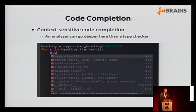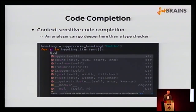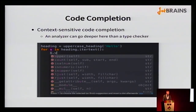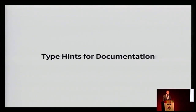Another benefit from type hints is code completion. In PyCharm we offer context-sensitive code completion based on the actual type of the variable — showing only methods and attributes of that type. In this example, we're iterating over an iterator of strings and invoke code completion for the variable we're iterating over. We know its type is string, so we show methods of the string class and its superclasses.